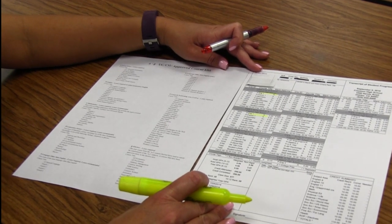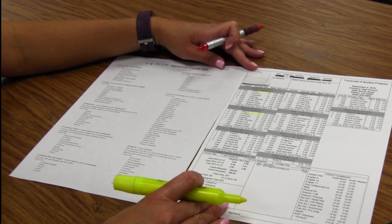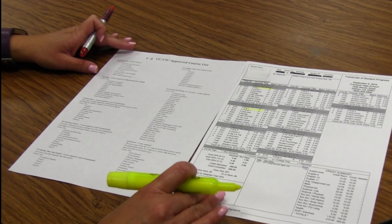For universities, when you go to that admission process, they're looking for all of your courses within the A through G to be passed with a C or better.